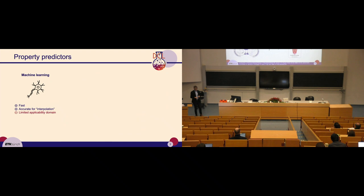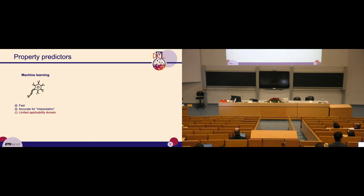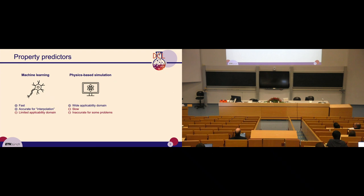We have different flavors of property predictors. We have pure machine learning, which is very fast and can be accurate for interpolation — structures quite similar to what is seen in the training set. Unfortunately, this is very bad for inverse design, because usually your target is to go outside what you already know. We can also do physics-based simulations — DFT, coupled cluster, even CASPT2 — but usually these are too slow for use in inverse design methods. And as we all know, these simulations are not always accurate against experiment; we can have complications such as solvation and other things.